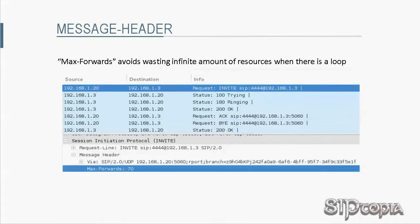The Max-Forwards header field in the SIP world serves pretty much the same purpose as the time-to-live mechanism in the IP world. The default value of Max-Forwards was chosen to be 70. Every time a SIP message is received by an entity on its route to its destination, the Max-Forwards value is decremented by one. If an entity receives a SIP message with a Max-Forwards value of zero, it will respond with a 483 Too Many Hops message and not forward the SIP message. With Max-Forwards, we avoid consuming infinite resources when there is a routing loop.